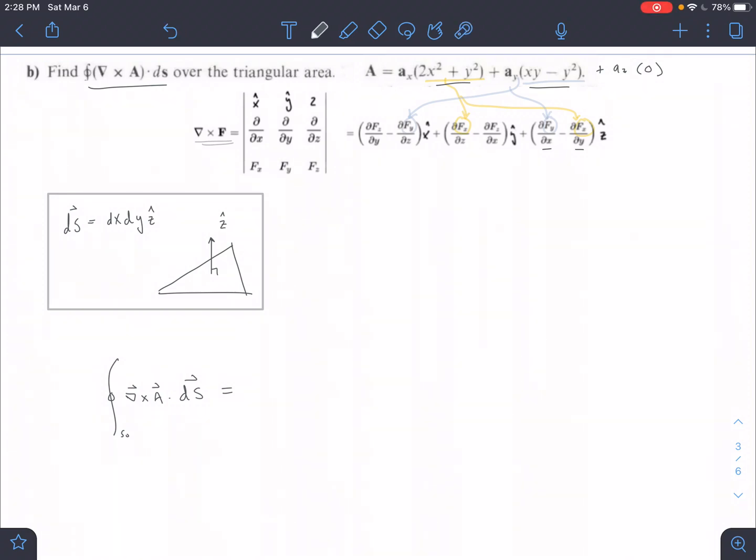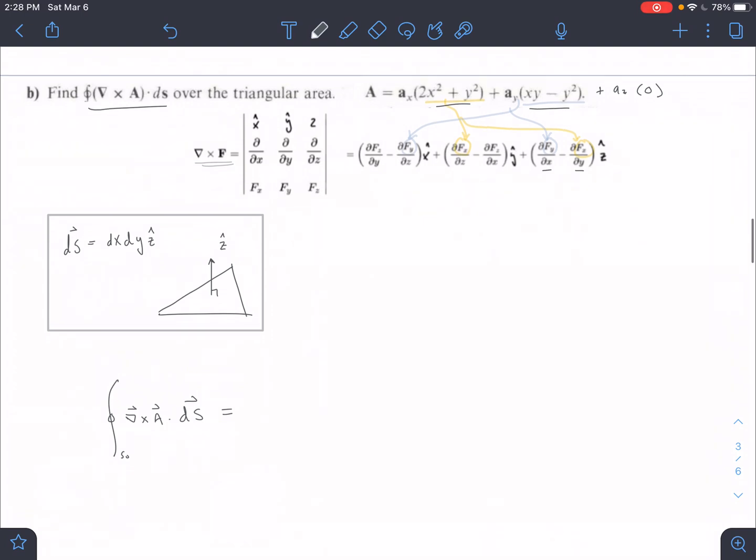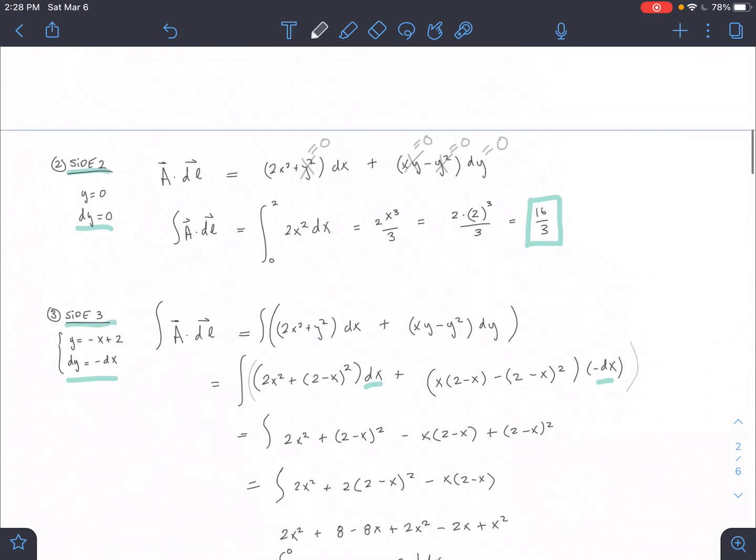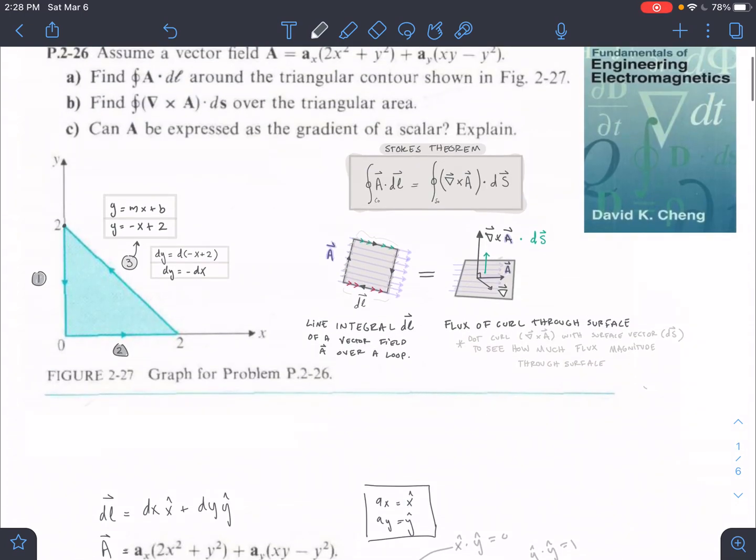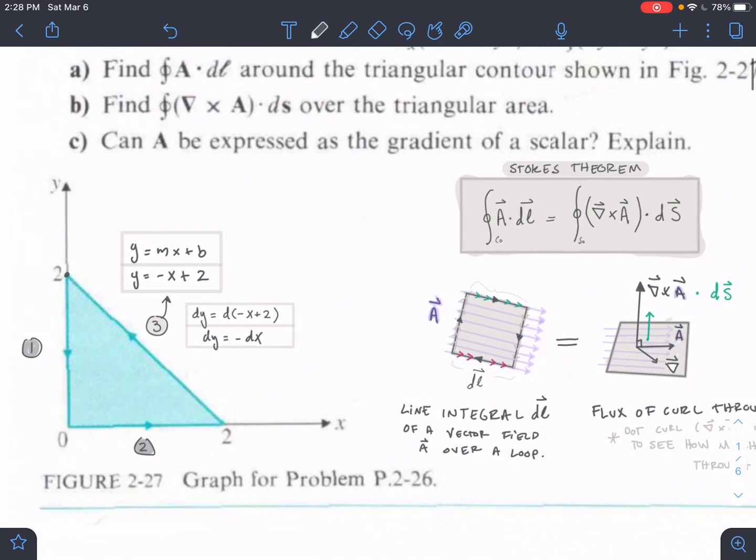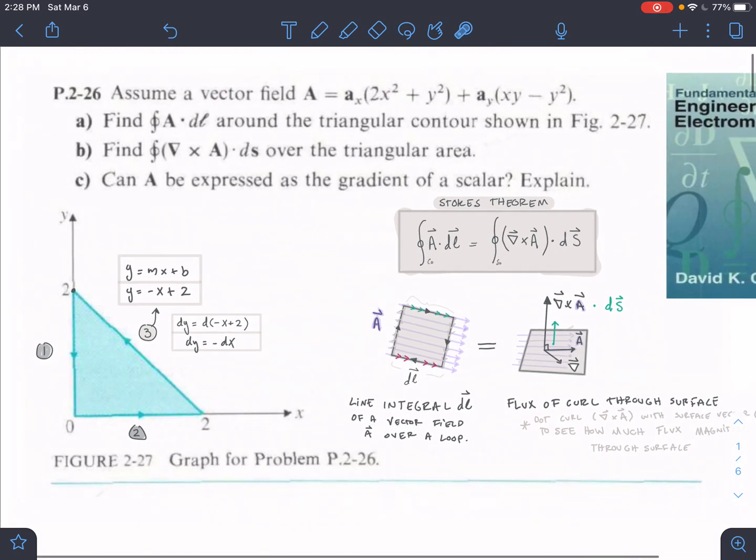Okay, so for this one we're looking at part B from problem 26. I'm just going to scroll back up so we can kind of see what the problem looked like. So problem 26, we have this triangle here. We're trying to find the curl dot ds for this problem. So we're going to first find this curl operation, and then we're going to dot with ds, and then look at our bounds.